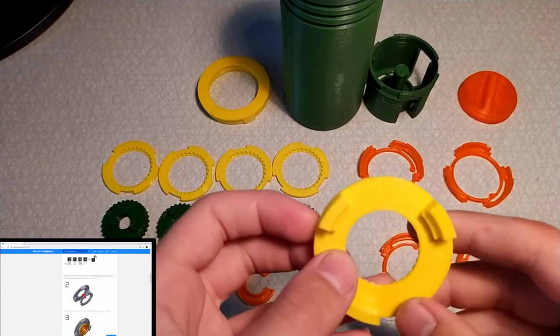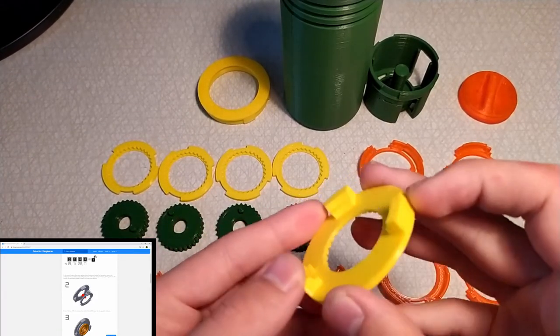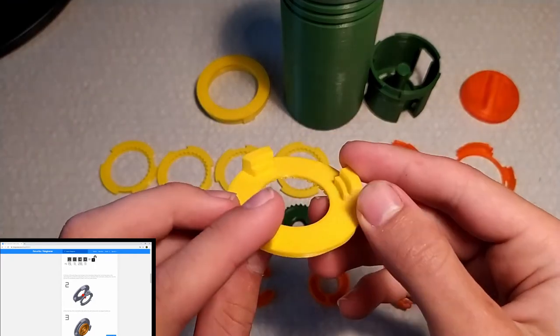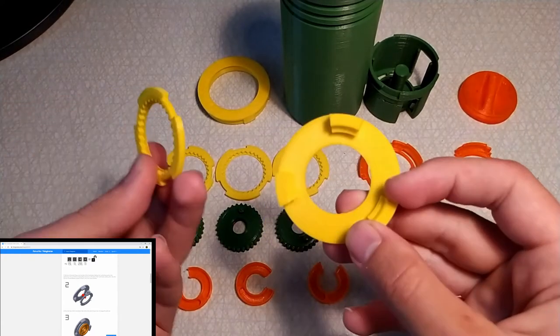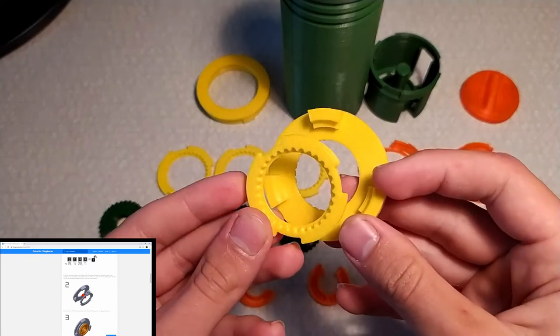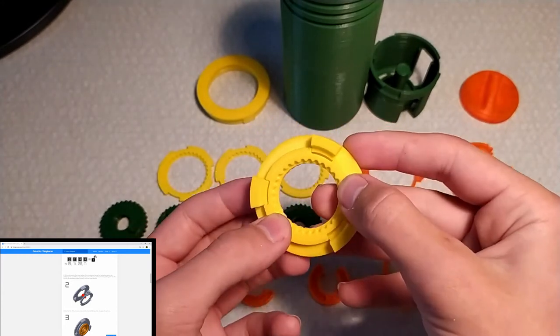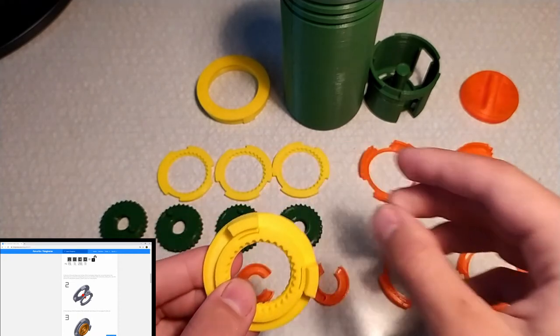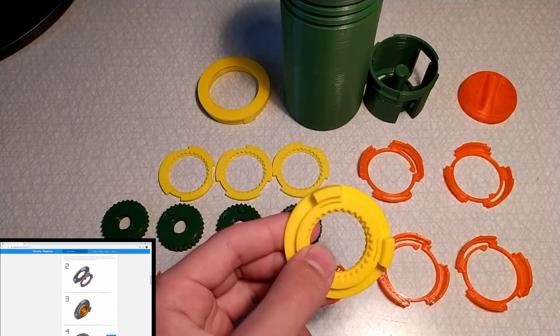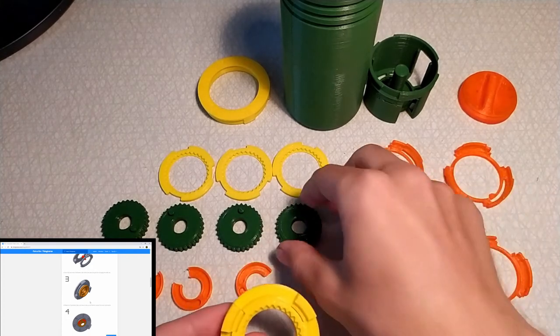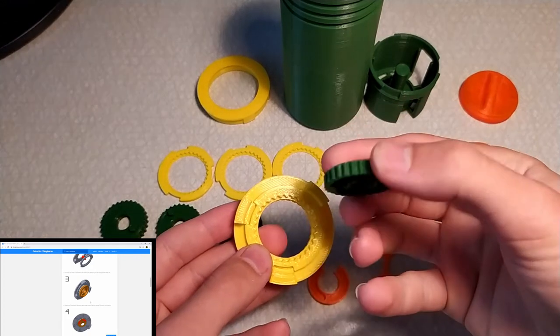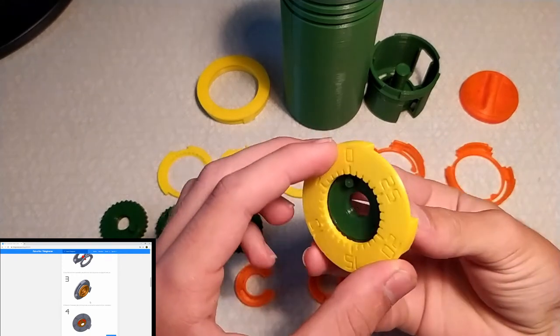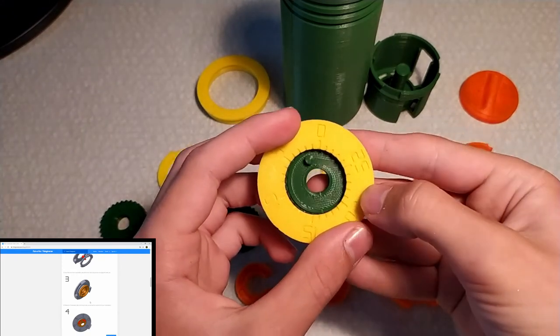So step one is done, and for step two this is the part that is used to set the combination. We start with inserting this and it only works in one direction, just like this. Then for step three we take one, and we need to look at the combination numbers right here.